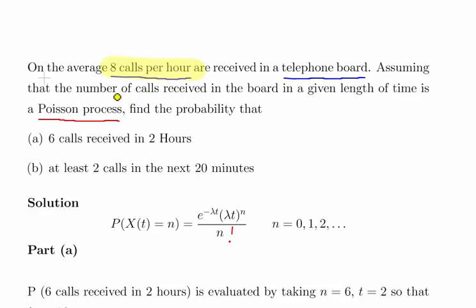Now, assuming that the number of calls received in the board in a given time length is a Poisson process, find the probability that six calls are received in two hours and at least two calls are received in the next 20 minutes.